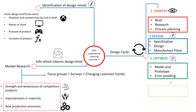We can prototype and model in different ways — through card modelling, CAD, or 3D printing, for example. Error proofing is essentially making sure the design works as intended. Think of a USB — there's only one way it can be put into a computer. Same as a plug — it can only be inserted one way into the wall. It's been error-proofed; it only works in one specific way.